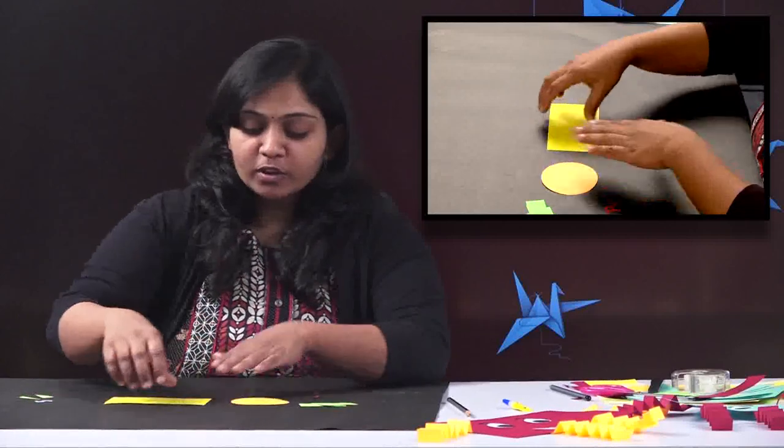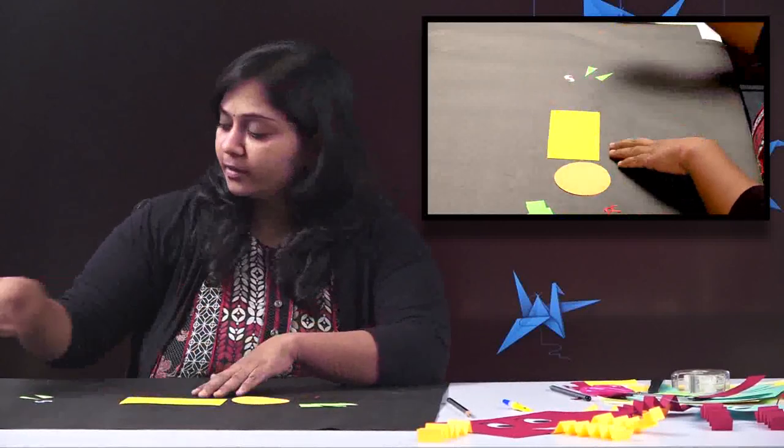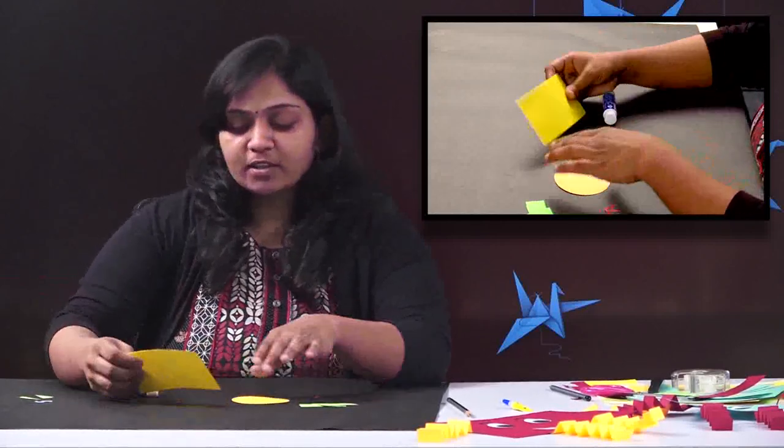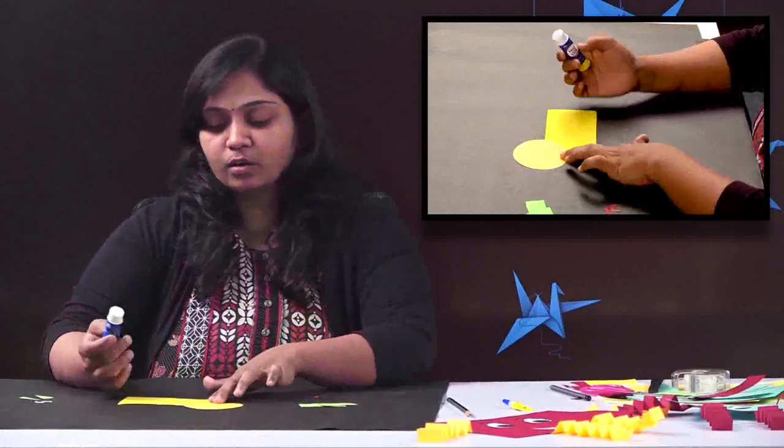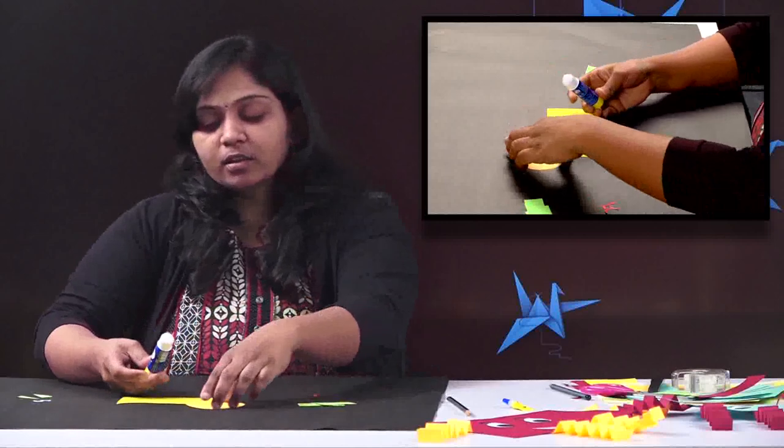For this, as I told you, these shapes you require. First I am going to take this rectangle and a circle. I am going to stick this circle on the rectangle, so our circle will play as a head and the rectangle as a body of the animal.